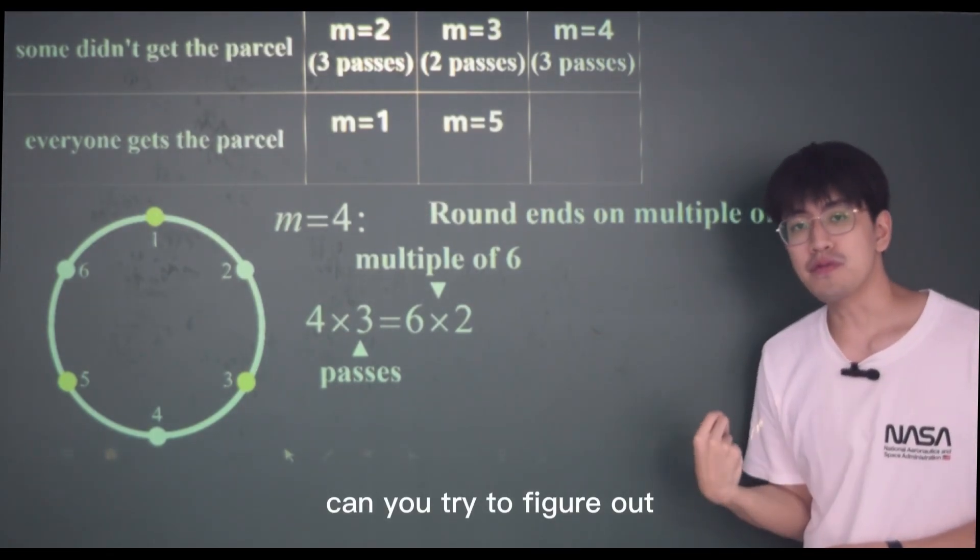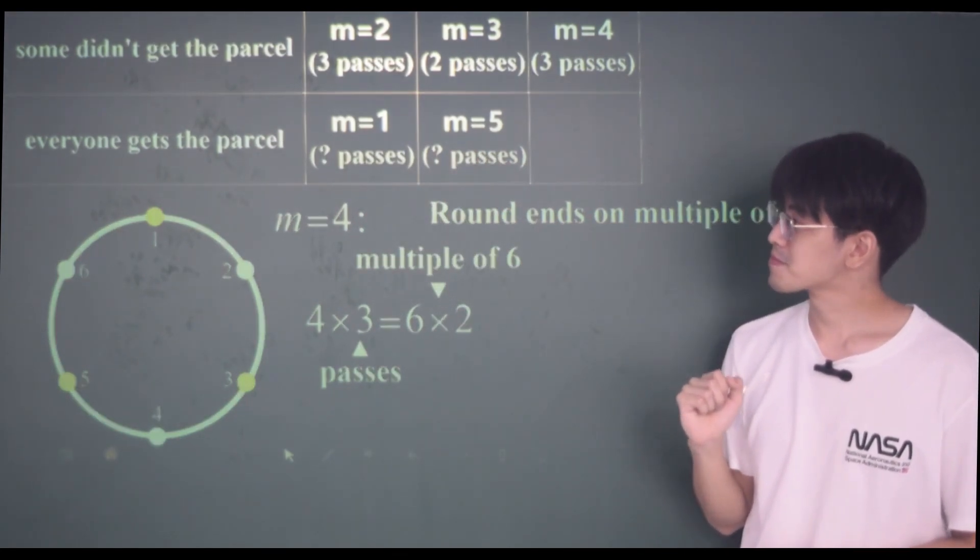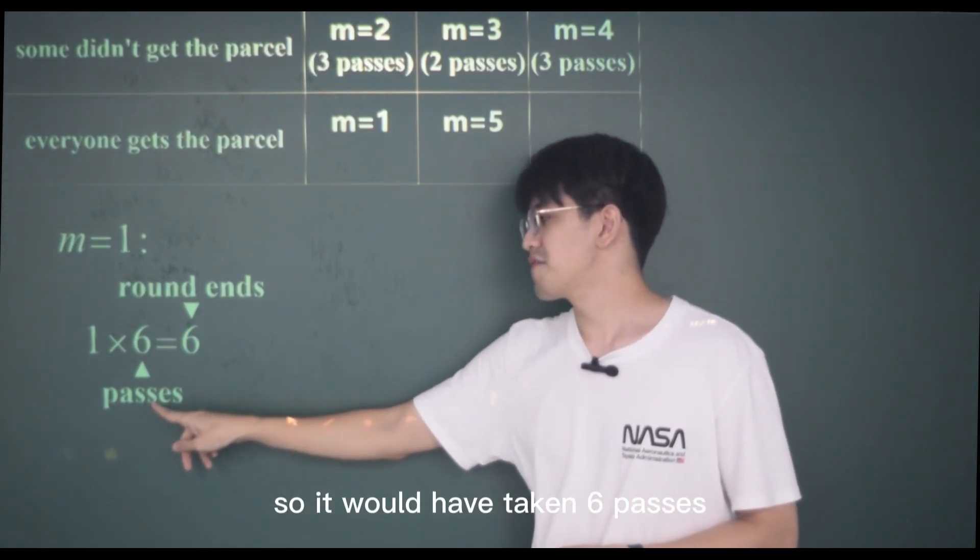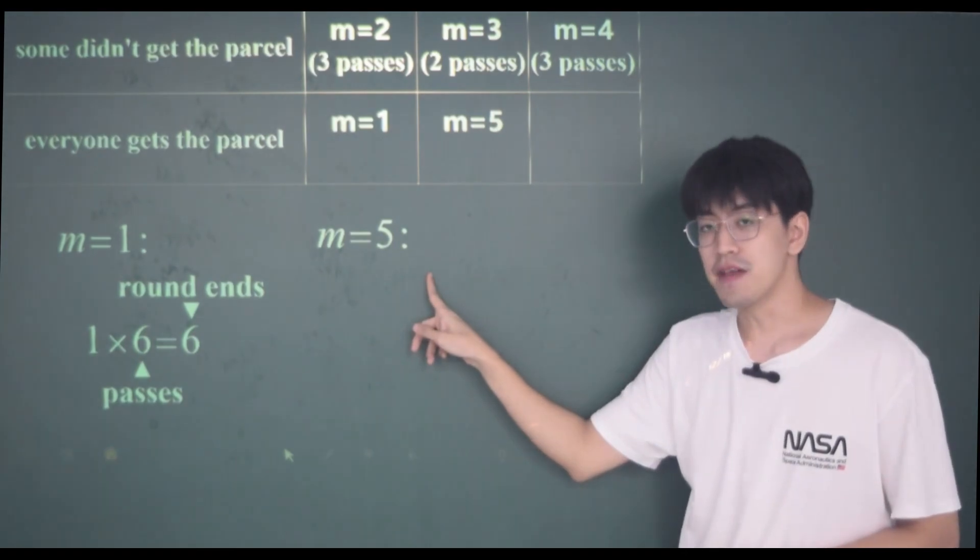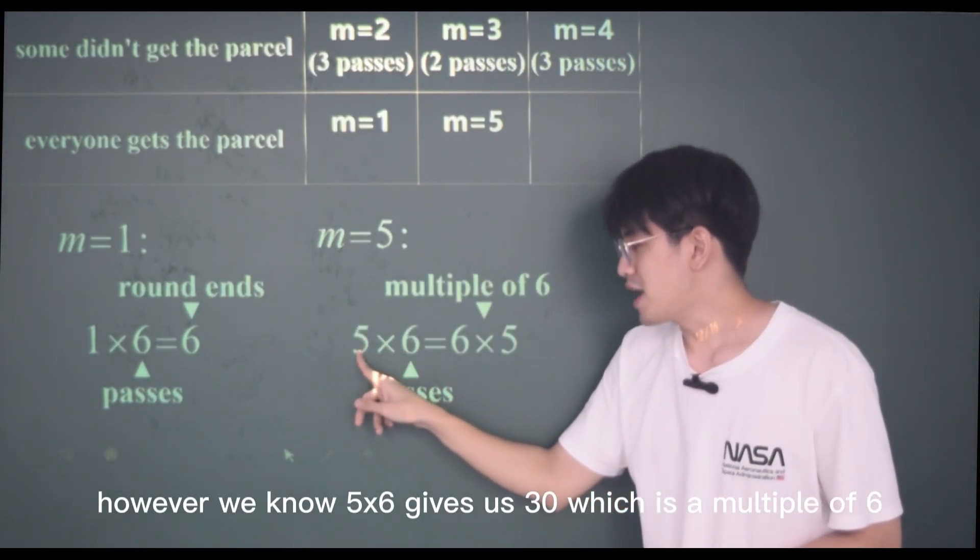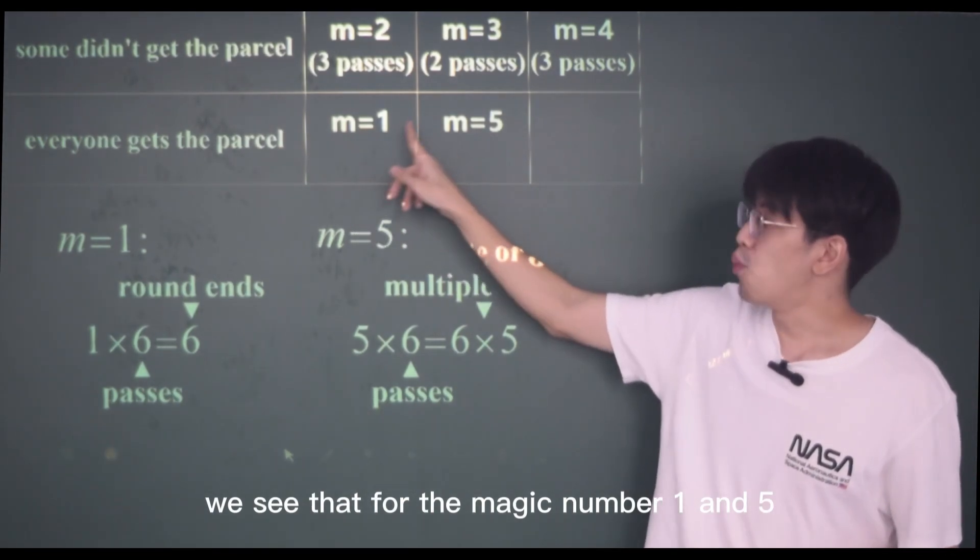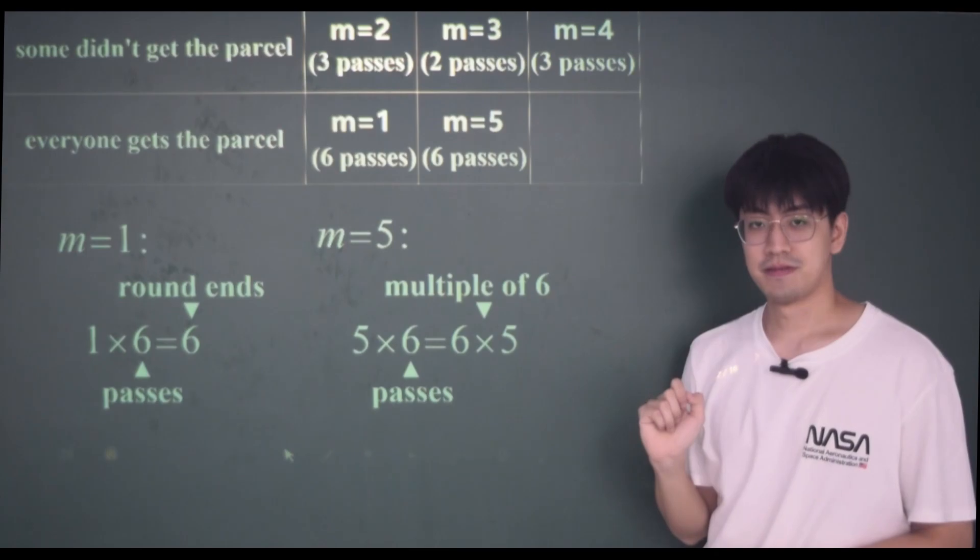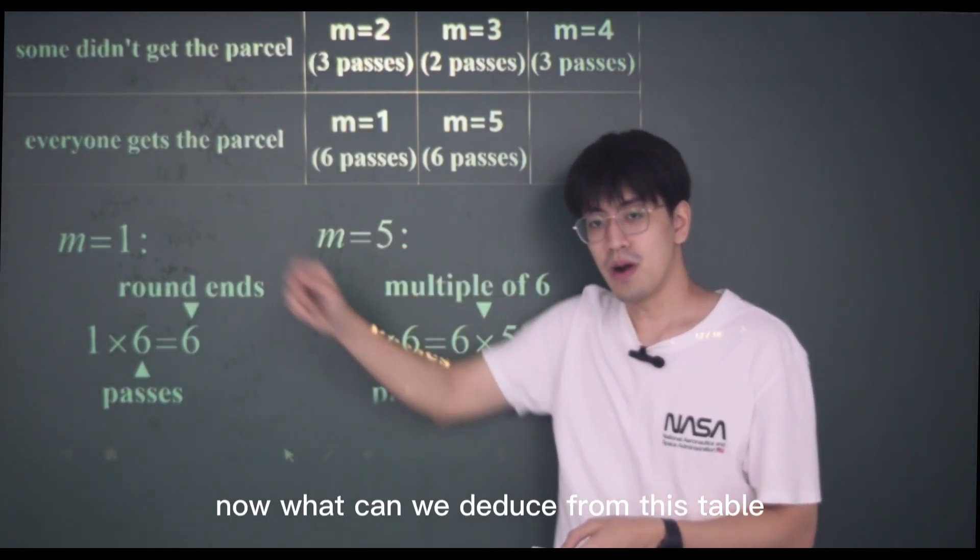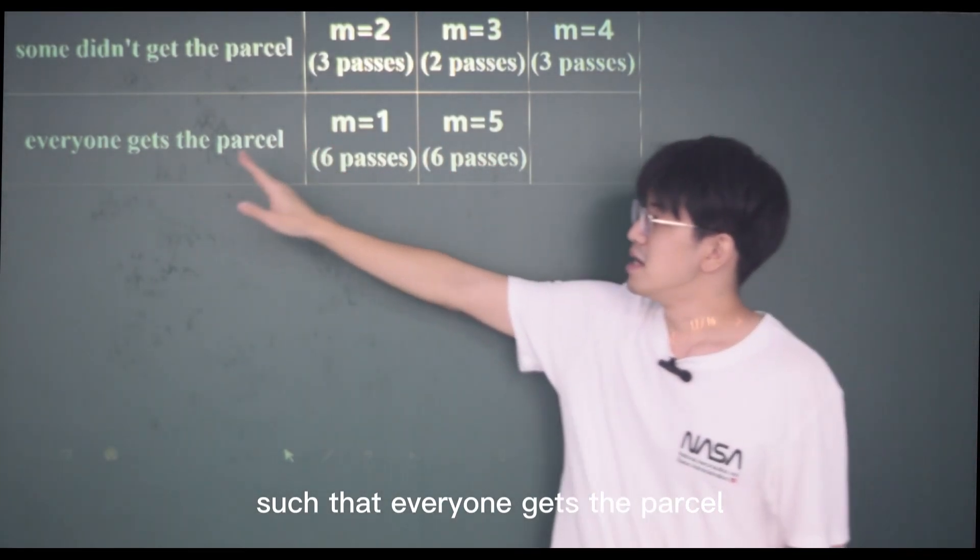Can you try to figure out how many passes it would take for the magic number one and five? With the magic number one, we know one times six equals six, so we would have taken six passes. With the magic number five, we see that there is no such number when multiplying with five would give us six. However, we know five times six gives us 30, which is a multiple of six. Therefore, for the magic number one and five, it would have taken six passes. But since we only have six children, it would mean everyone gets the parcel. What can we deduce from this table? What is so special about these two numbers such that everyone gets the parcel?